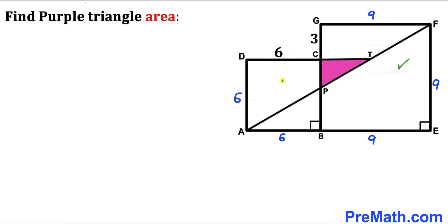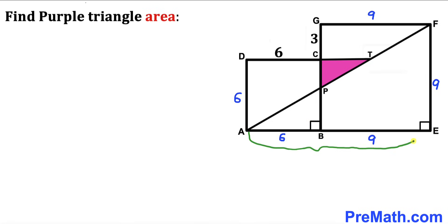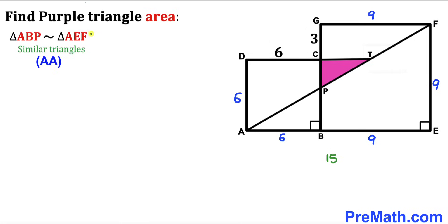We can see that we are dealing with these two squares, so these angles are going to be 90 degrees. The whole side length AE is going to be 6 plus 9, giving us 15 units. Right triangle ABP is similar to the bigger triangle AEF according to the angle-angle similarity theorem, because this angle is in common between the two triangles, and both triangles have a 90-degree angle.